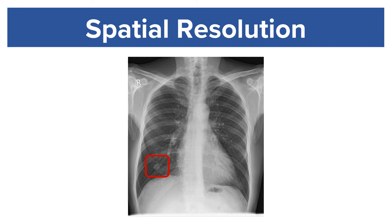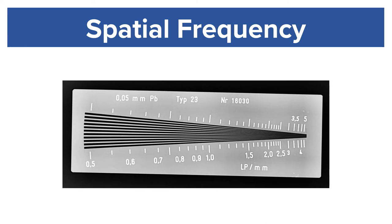Spatial resolution can be measured by the way of spatial frequency. We use the expression line pair per millimeter. A line pair consists of one dark line and one light line.